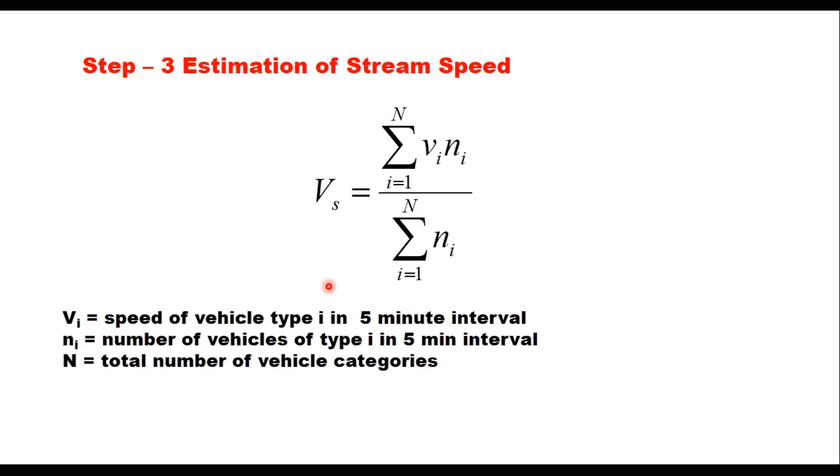So now you have for each 5 minute interval the traffic volume in PCU per hour. Then the third step is to estimate the stream speed. For each 5 minute interval you have the speed of individual vehicle and their number also.